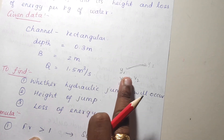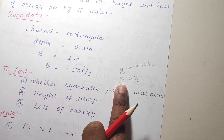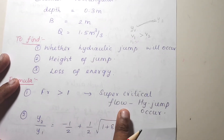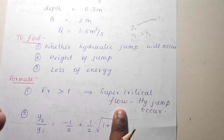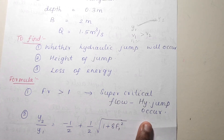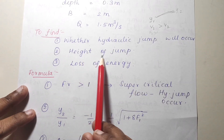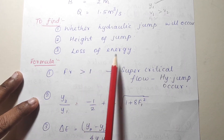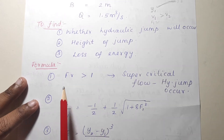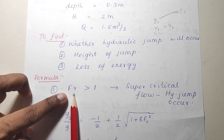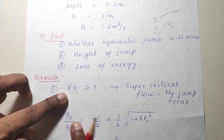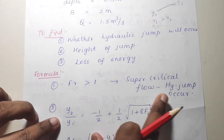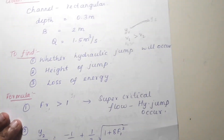At supercritical conditions, the depth will be very small and velocity will be higher. If velocity is higher, the Froude number will be greater than 1. So first, find the Froude number with the initial depth y1. If the Froude number is greater than 1, the hydraulic jump will occur. After that, find the height of the jump using y2/y1 formula and the loss of energy using the delta E formula.